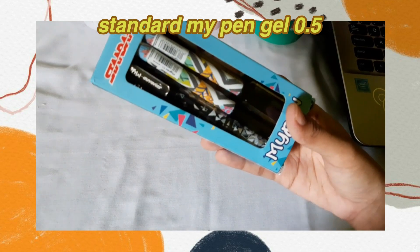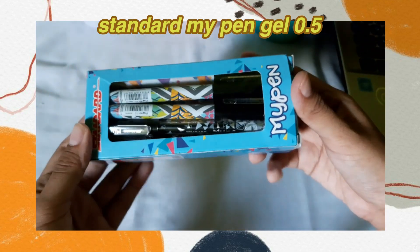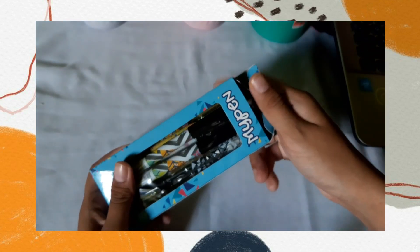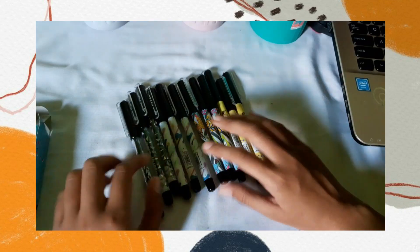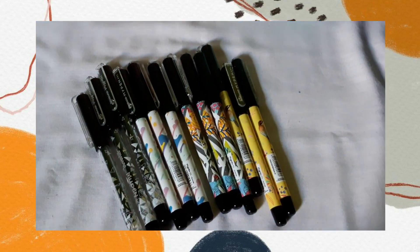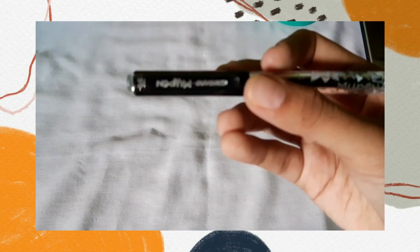Lanjut, Standard My Pen Gel 0.5. Ini juga satu pen isinya 12 pieces. Kemasannya lucu banget, transparent gitu. Body pennya ada motif-motifnya dengan 4 motif yang berbeda. Ini estetik sih.